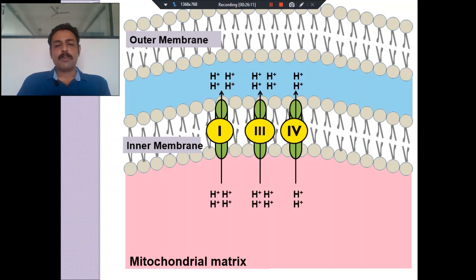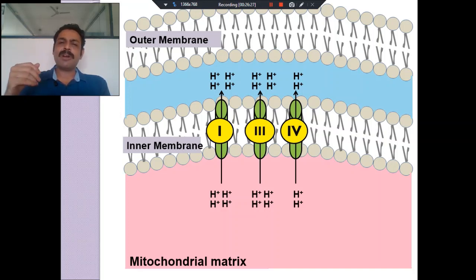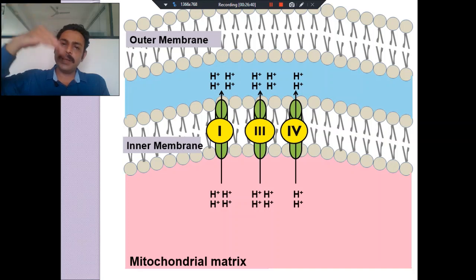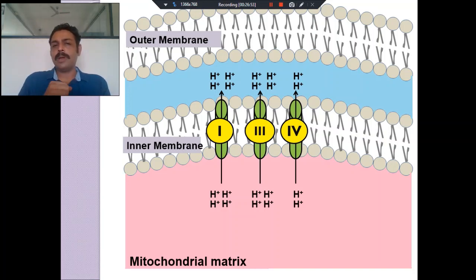Complex I pumps four protons, Complex III pumps four protons, and Complex IV pumps two protons. So many protons are pumped into the inter-mitochondrial space that a gradient is created. Like a rush inside a bus, the protons want to get out. There is an electrochemical gradient — electrical because H⁺ is a positive ion, so more positivity outside means more negativity inside. Chemically, more hydrogen concentration is accumulating in the inter-mitochondrial space, so they want to come back inside.